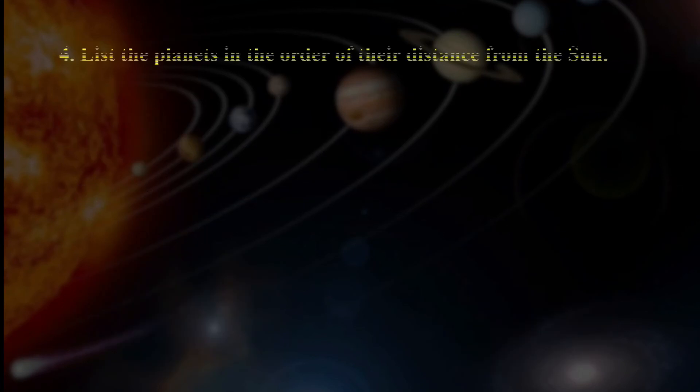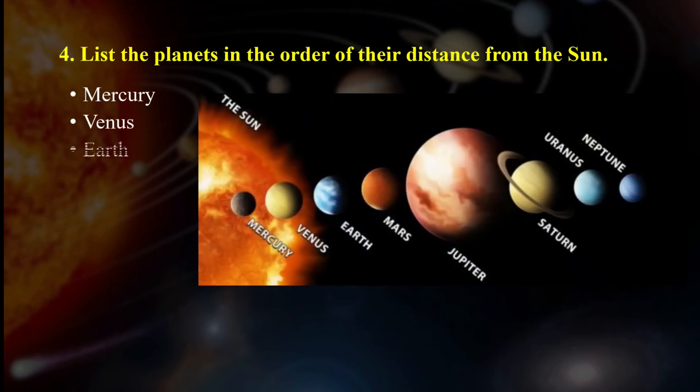Next, list the planets in the order of their distance from the sun. Very easy. My very educated mother just served us noodles. Mercury, Venus, Earth, Mars, Jupiter, Saturn, Uranus, and Neptune.